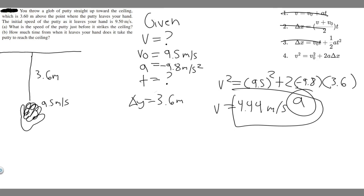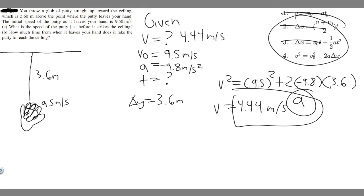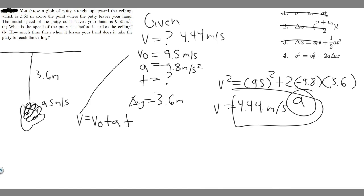Let's move on to Part B. We're solving for T now, and we found V equals 4.44 meters per second, which we'll use here. Looking at the kinematic equations, we can use any of them except the last one since it doesn't contain T. I'm going to choose the first one — V equals V sub 0 plus A times T — because it's the easiest to solve. Notice we have all the variables: V is 4.44, we know V sub 0, and we know A, so we just solve for T.